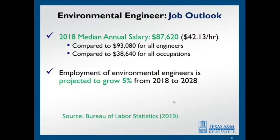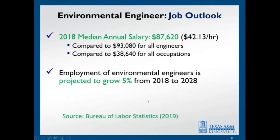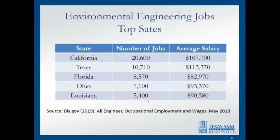Let's take a look at the job outlook for environmental engineers. In 2018, the median annual salary for an environmental engineer was a little bit over $87,000. That translates to approximately $42 per hour — very appealing and comparable to many other occupations and other engineering fields. It's not only about the salary, but take a look at the projection. If you join our program and graduate in the next three or four years, the job outlook is going to be important. The US Department of Labor is projecting that employment of environmental engineers will grow about 5% in the next decade, which is very appealing.